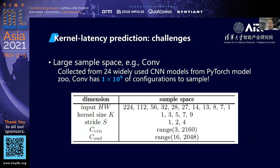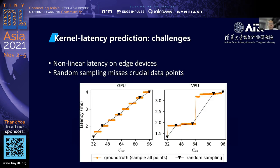The next problem is how to predict kernel latency accurately. This is not simple, because in a convolution operator there are multiple dimensions to consider, resulting in a huge configuration space to sample. Also, as shown earlier, there are non-linear patterns in the latency with different parameter dimensions. If we just do random sampling, we can easily miss crucial data points and fail to achieve accurate latency prediction. To address this, we propose adaptive data sampling. The key idea is to start from popular configurations, leveraging experience from how human experts design models. Then we build a model and test it. For data points with high error, we do more fine-grained sampling so that, over multiple iterations, we eventually build a good prediction model.